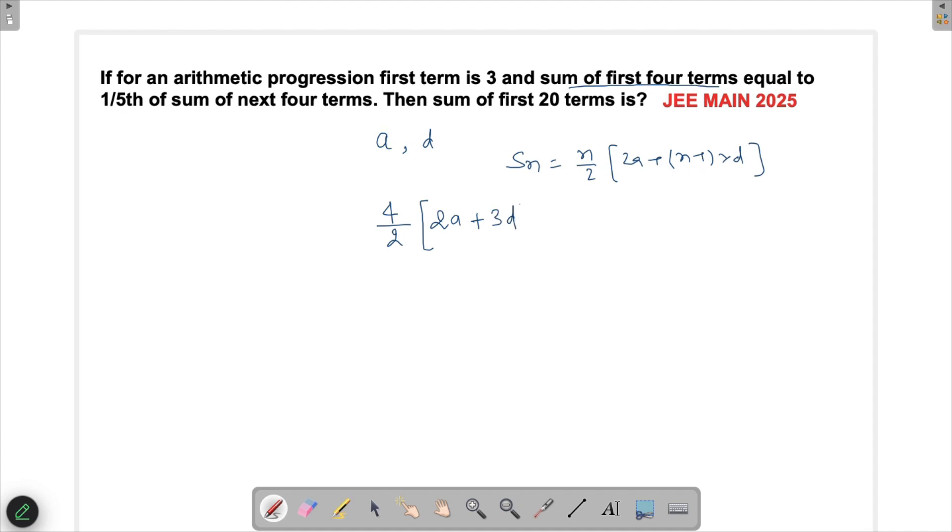This is equal to one-fifth of the sum of the next four terms. That is also an AP, but the first term is a5. We need to find the summation of a5, a6, a7, and a8.